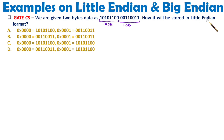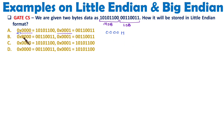The question is: how will it be stored in little-endian format? Whenever you have data to store in little-endian or big-endian, first you need to identify the address. Looking at options A, B, C, D, we have two addresses: 0x0000 and 0x0001. You might wonder what 0x means — it means the data is in hexadecimal form. So the first address is 0000 hex and the second address is 0001 hex.